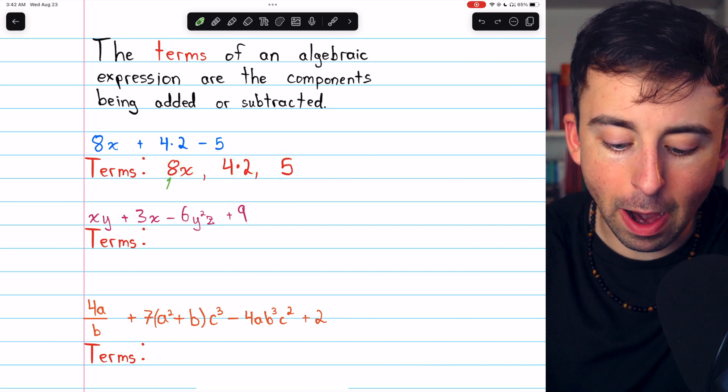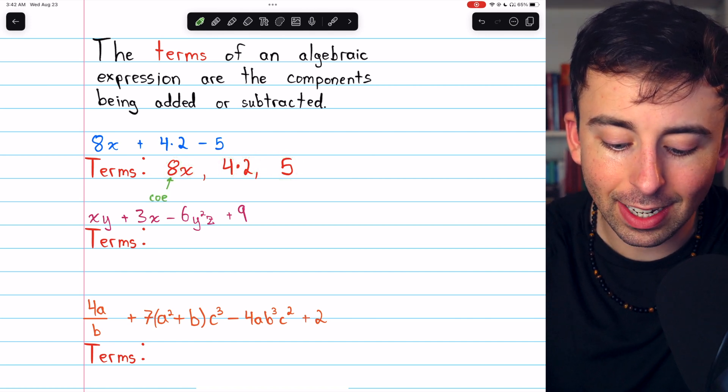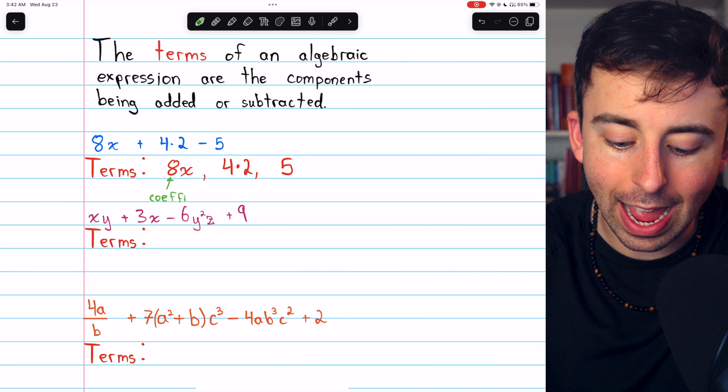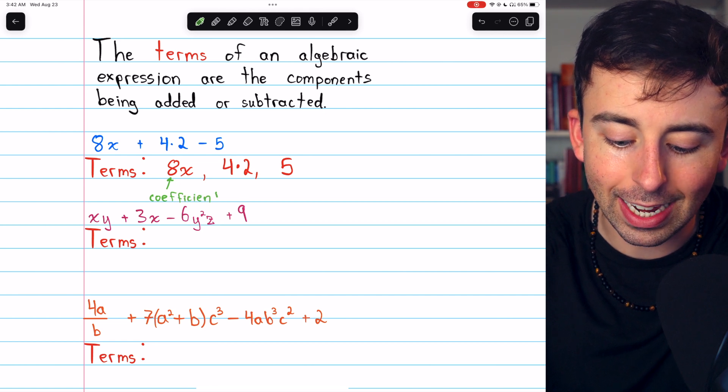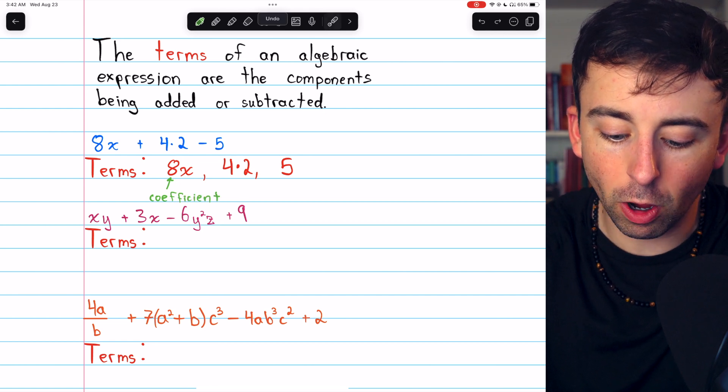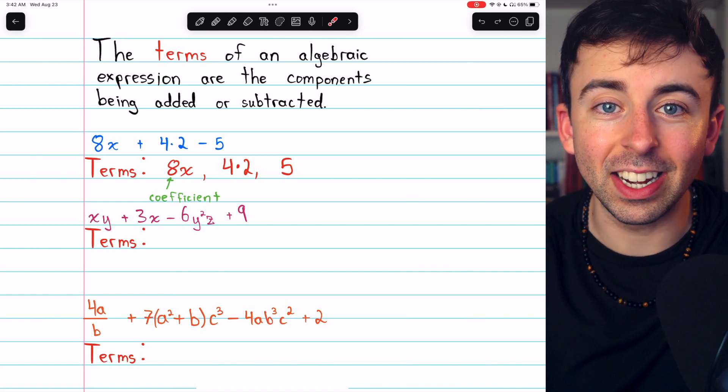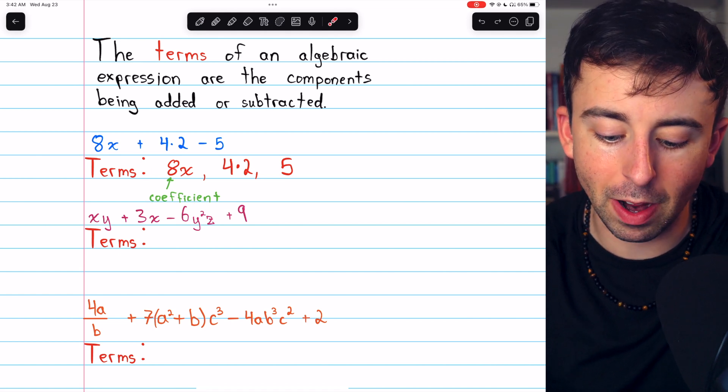As a side note, when we have a numerical factor like 8 getting multiplied by a variable factor like x, 8 is called the coefficient of the term. It's the number getting multiplied by the variable.